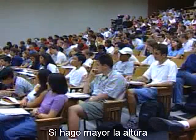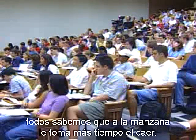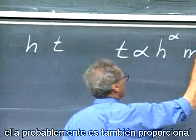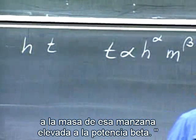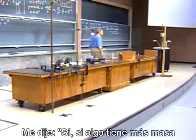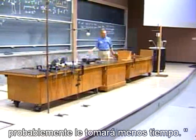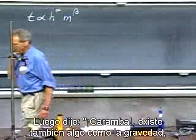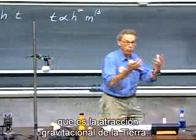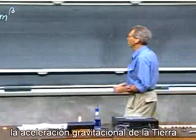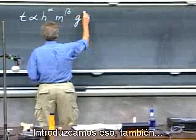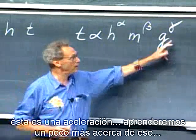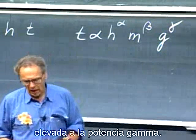If I make the height larger, we all know it takes longer for the apple to fall. I also said: if the apple has a mass m, it probably is also proportional to the mass to the power beta — if something is more massive, it will probably take less time. I don't know alpha, I don't know beta. And then there is also gravity — the Earth's gravitational acceleration g. So let's assume that the time is also proportional to g to the power gamma.